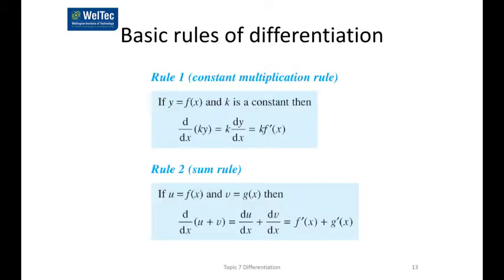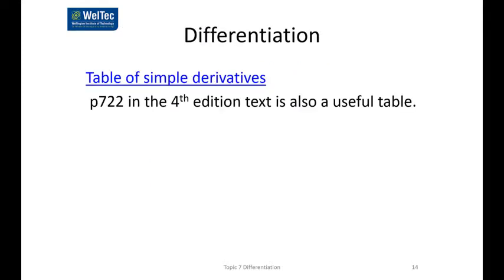As usual, there are some rules. The derivative of k times a function — where k is a constant — you can bring the k out, and it's k times the derivative. If you have the derivative of a sum, the answer is the sum of the derivatives. We don't do differentiation from first principles; that's where those rules come from. You will look up a table of derivatives. In the fourth edition of the text, page 722, there is a list. You can look it up, have it on your screen, or just learn them.